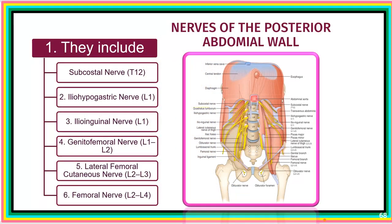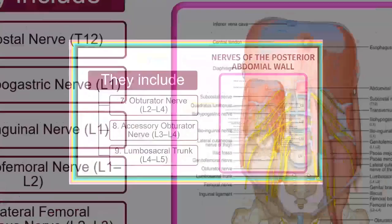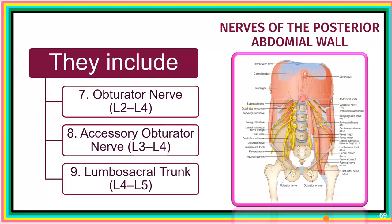The nerves of the posterior abdominal wall number about nine and include: the subcostal nerve, iliohypogastric nerve, ilioinguinal nerve, genitofemoral nerve, lateral femoral cutaneous nerve, femoral nerve, obturator nerve, accessory obturator nerve, and the lumbosacral trunk.